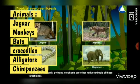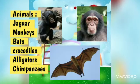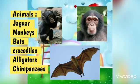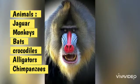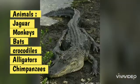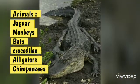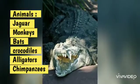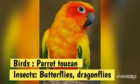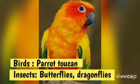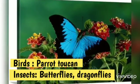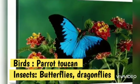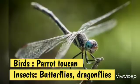Animals such as jaguar, elephant, monkeys, chimpanzees, bats, baboons, crocodiles, alligators, etc. The birds in this region are parrot and toucan. We can also see insects such as butterflies and dragonflies.